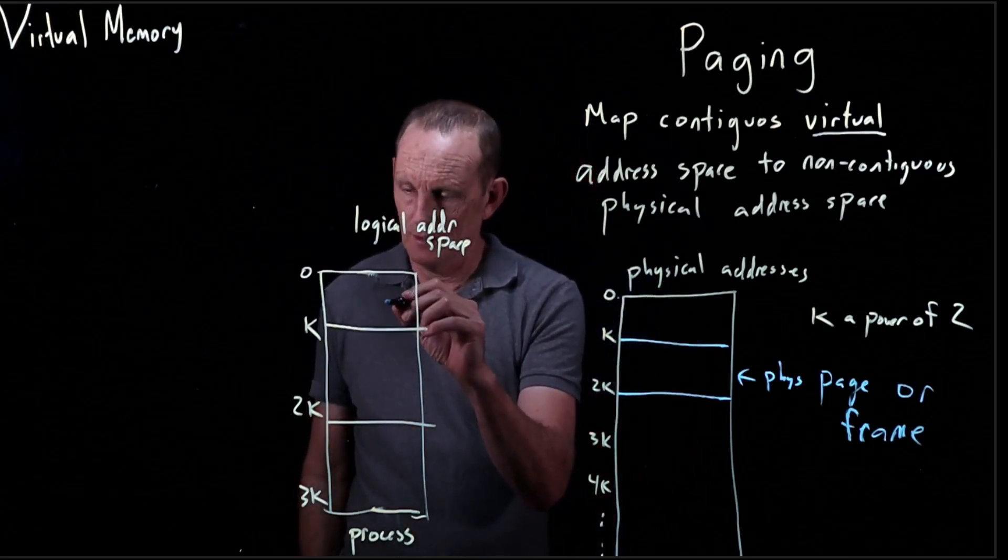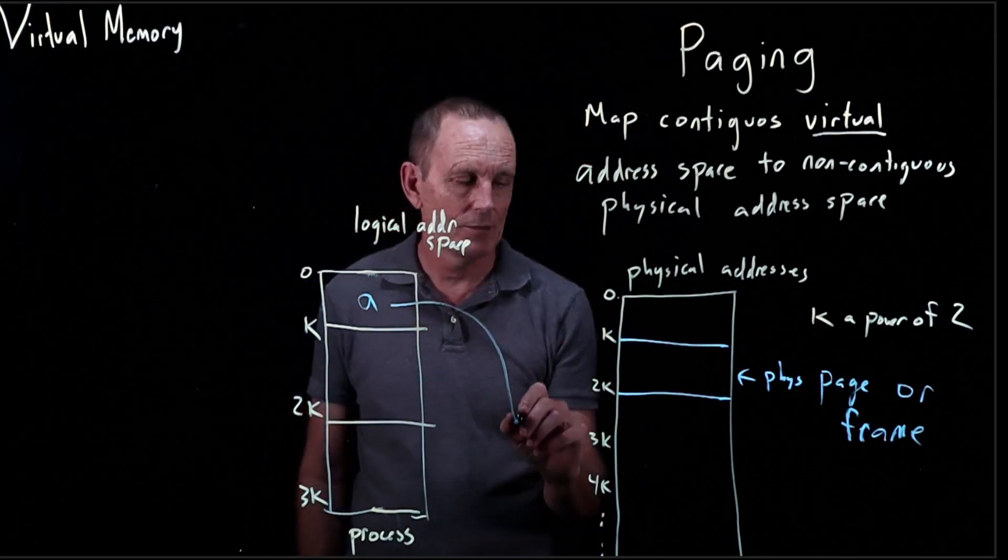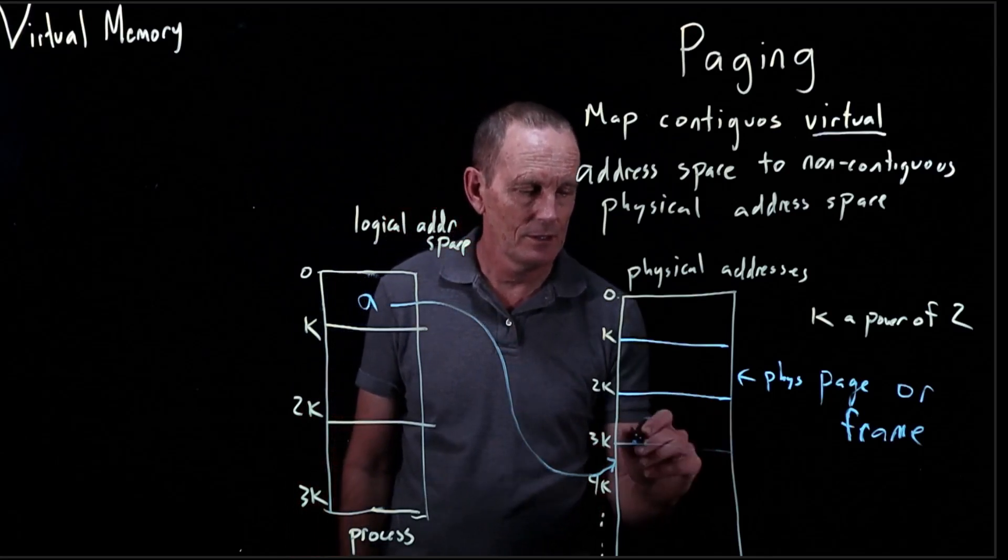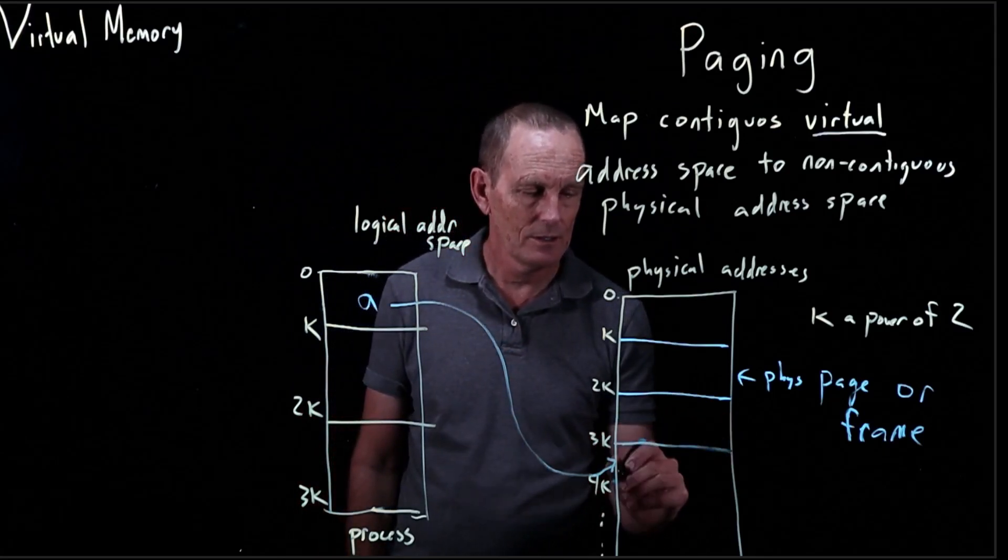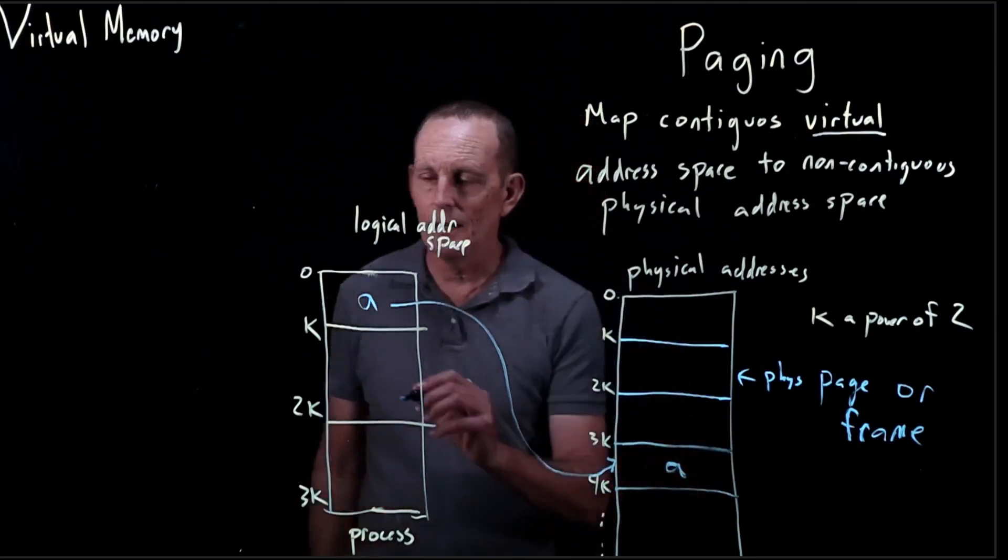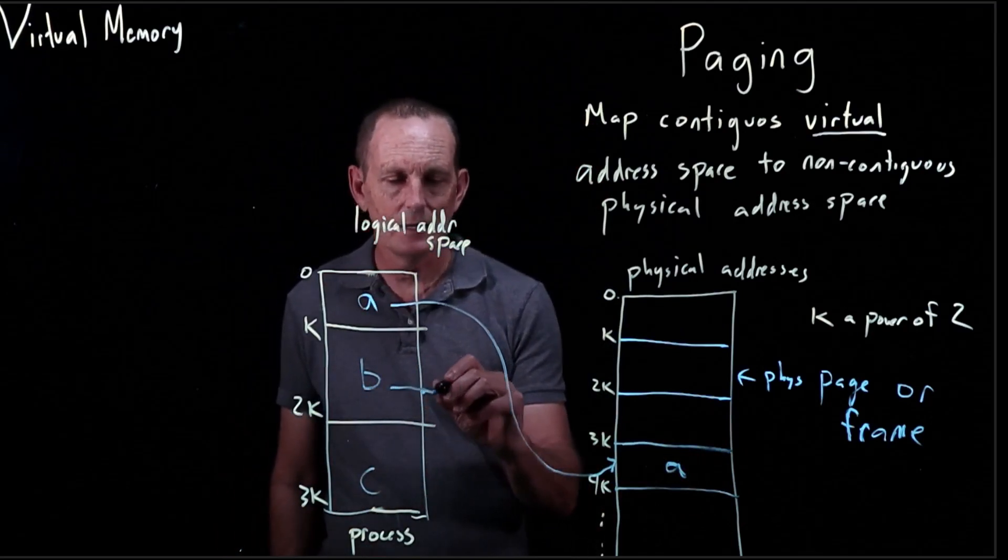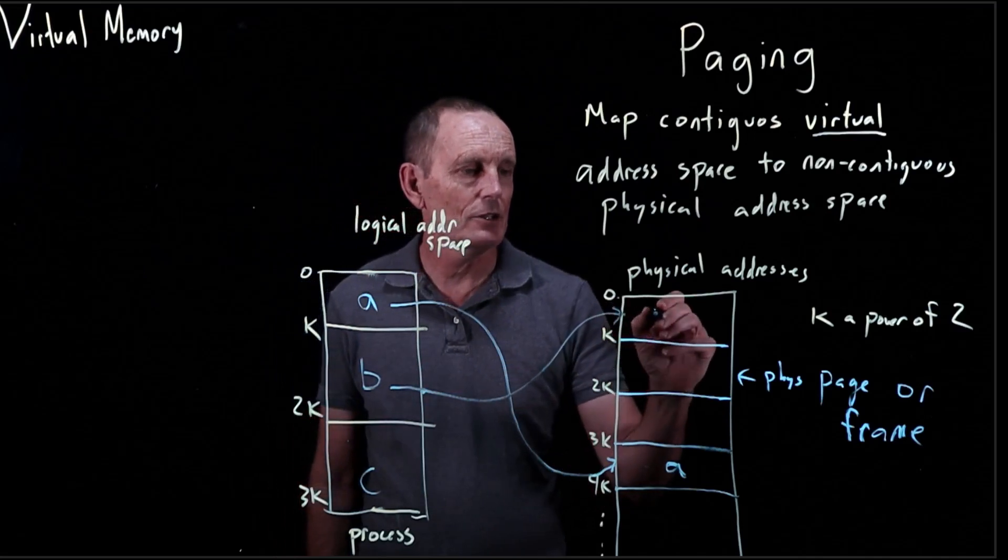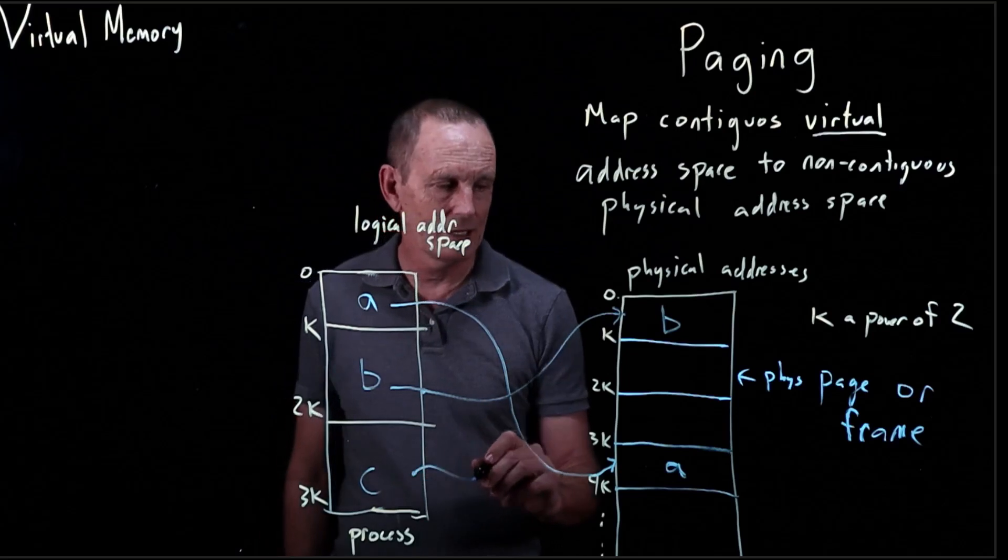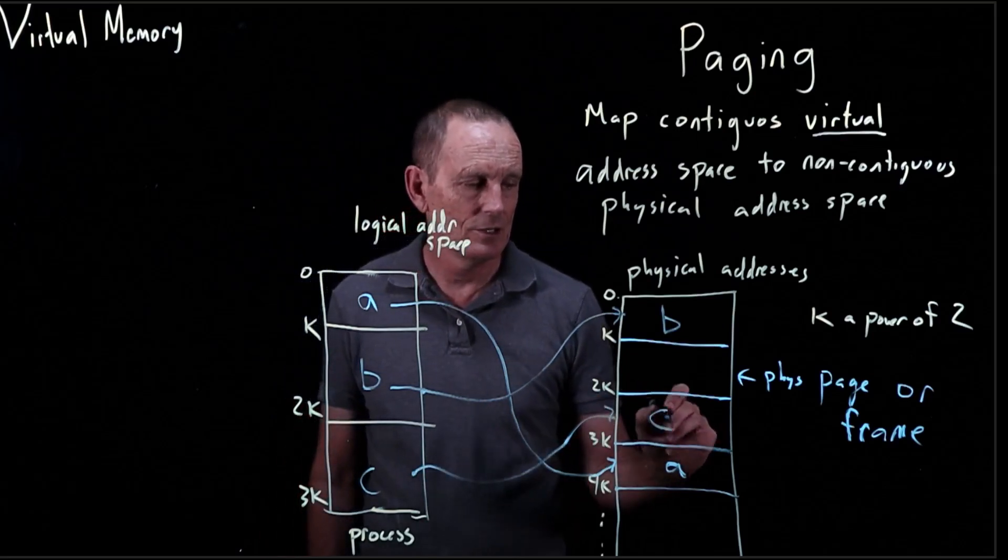So it might be that the first one, let's say there's some content in here like 'a', this one might go down to here. So this is where something with the contents of 'a' would be. And then this contains 'b' and this contains 'c'. And this one might be up at the very first physical page. And this one might be here at index 2.